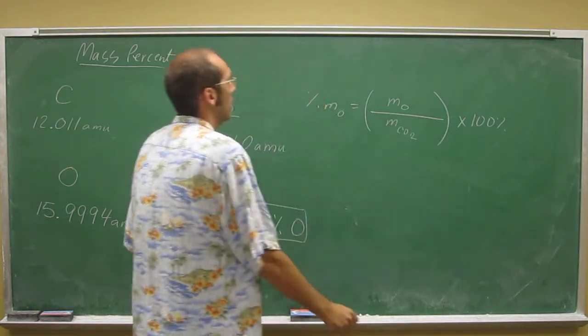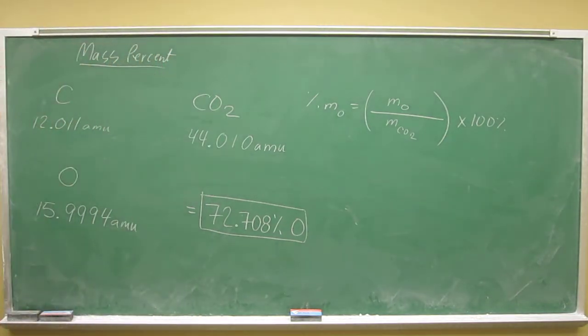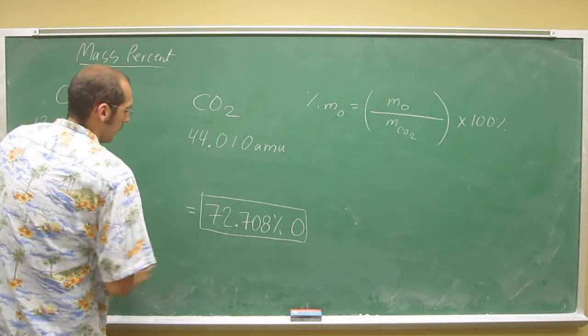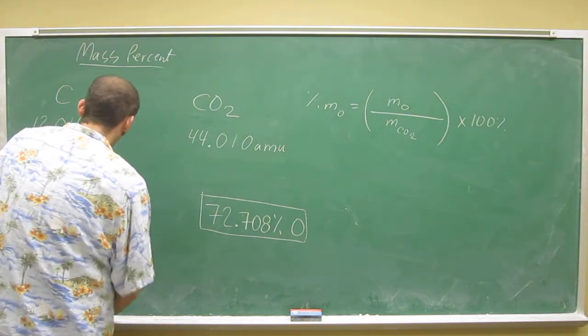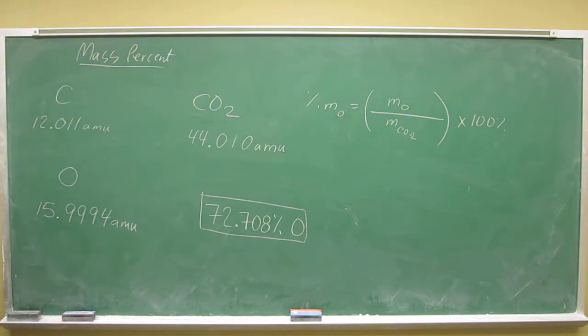So the mass of oxygen in carbon dioxide. Hopefully we get a number that's very similar to 72.7%. Anyways, in order to do this, you've got to remember that there's two oxygens in carbon dioxide.